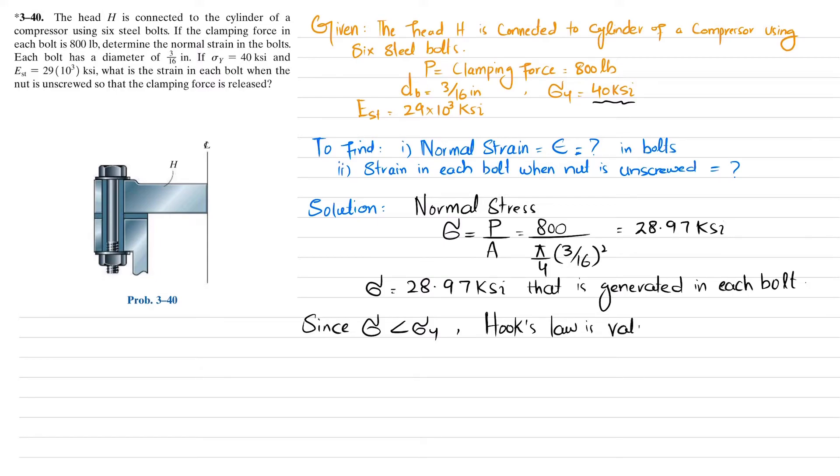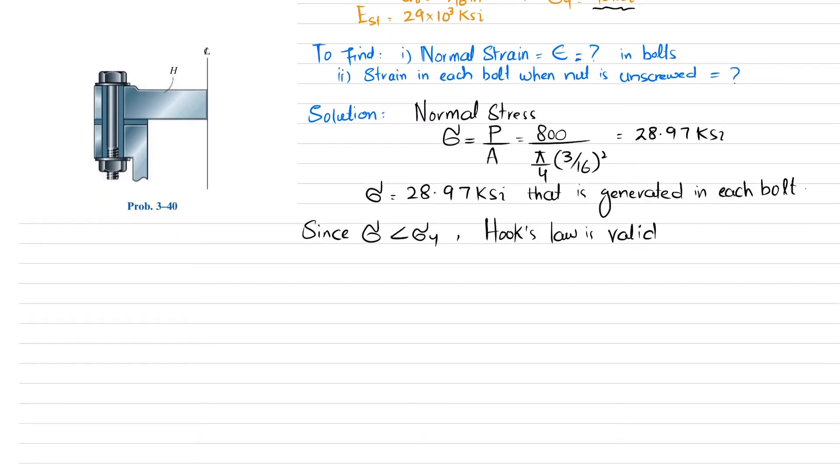If Hook's law is valid, we know that stress equals strain times modulus of elasticity. From here, the normal strain equals stress divided by modulus of elasticity. So 28.97 ksi divided by 29×10³ ksi gives strain of 0.000999 inch per inch. This is the answer to part A.